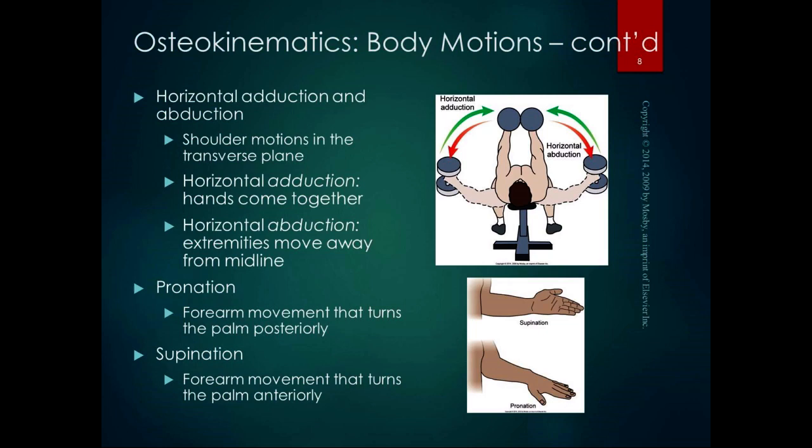Pronation and supination describe motion only at the forearm. Although the feet and ankles have pronation and supination, those are combination movements we'll cover in the foot and ankle chapter. For the forearm: pronation turns the palm posteriorly, out of anatomical position; supination returns it to facing anteriorly. When the elbow is bent, supination turns the palm up — like holding a bowl of soup — and pronation turns the palm down.